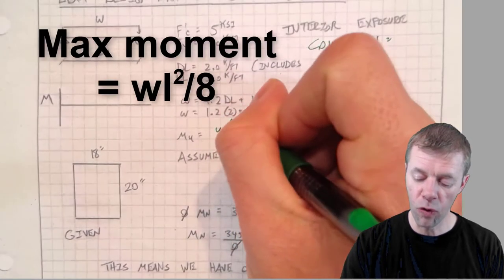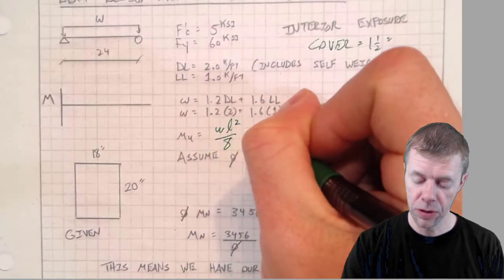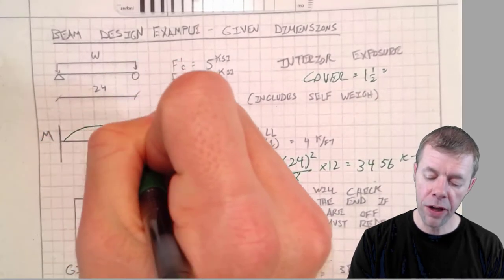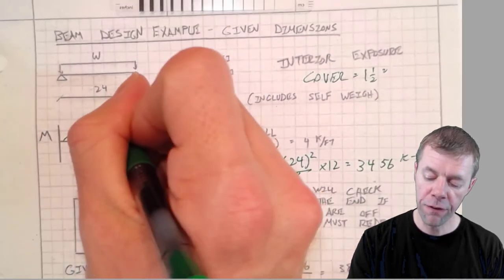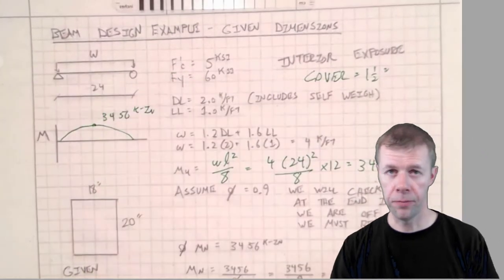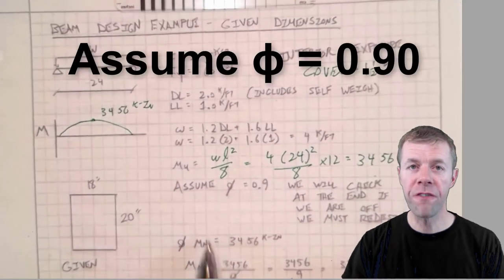Now we're gonna solve for our maximum moment. Our maximum moment can be found from WL squared over 8, that's from structural analysis. This is a parabola and that value is the top: 3,456 kip inches.